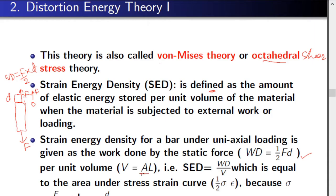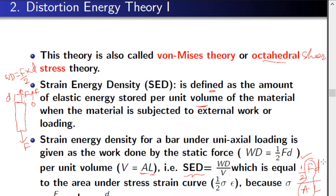For a bar with cross-sectional area A and length L, the volume is A times L. From the definition of strain energy density — elastic energy stored per unit volume — the elastic energy equals the external work done. So strain energy density equals work done divided by volume, which is (1/2 × F × d) / (A × L). Here F/A is your stress sigma, and d/L is your strain epsilon. So strain energy density equals (1/2) × sigma × epsilon. This is for a uniaxial bar; for a three-dimensional body the formula is slightly different.